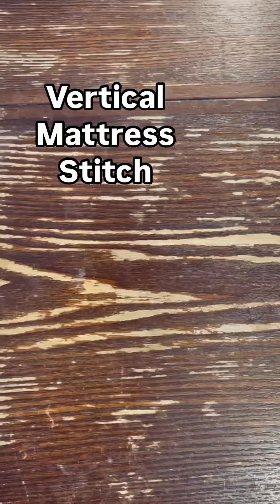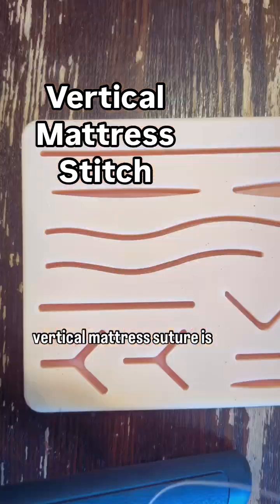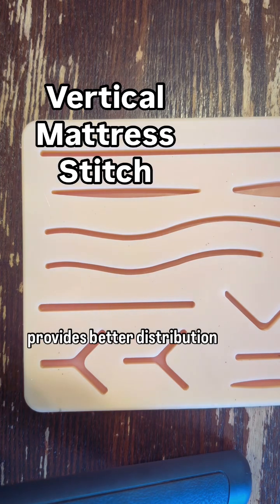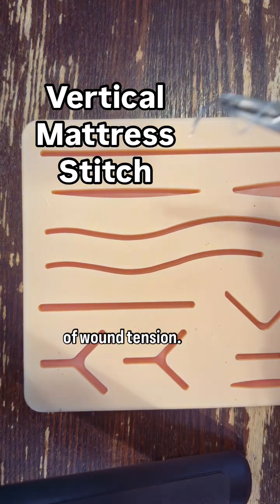Let's go over a vertical mattress stitch. The main indication of a vertical mattress suture is to evert the skin, and it also provides better distribution of wound tension.